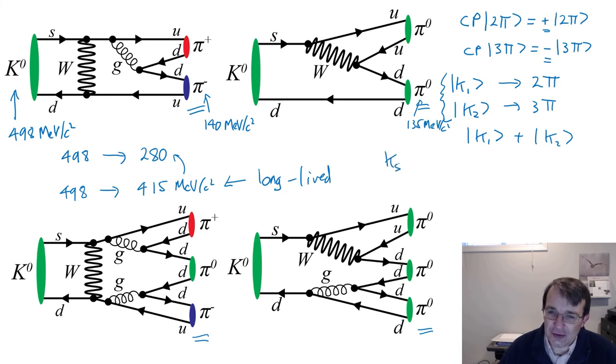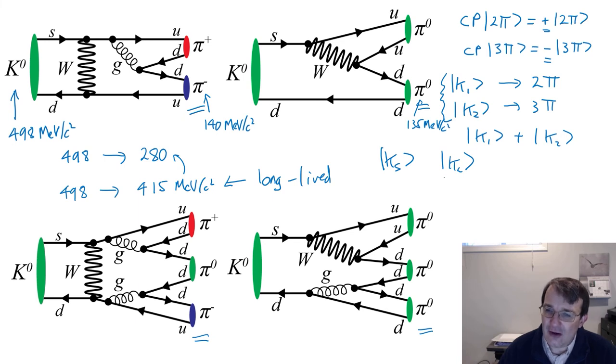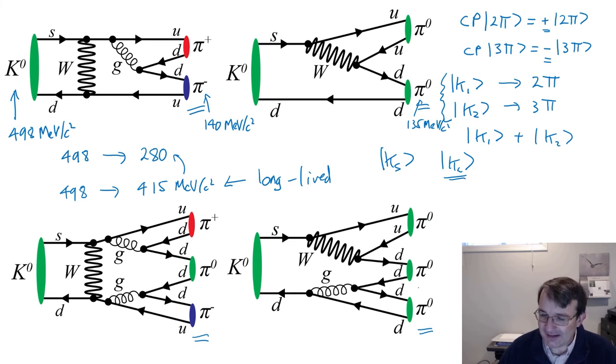That gives us a way to separate the two states. There is a short-lived kaon and a long-lived kaon state. If CP is conserved, the long-lived kaon state should have CP eigenvalue minus one, and should only decay into three pions. This happy coincidence — that the two CP states have very different lifetimes due to the phase space difference — means we can actually test whether the weak force violates CP.